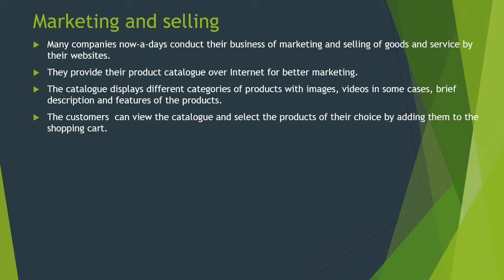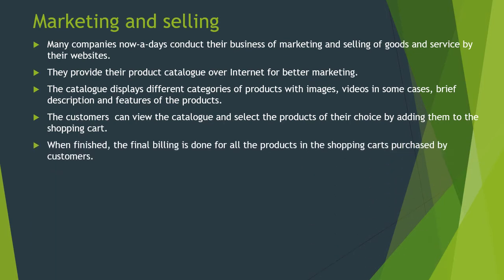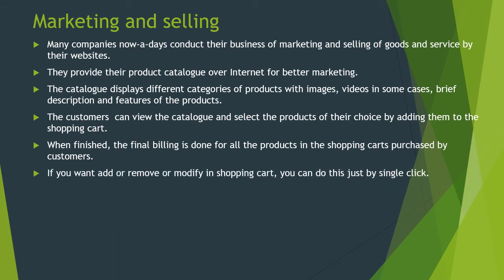Just like when you go to an offline store and put various items into a trolley — that is called a cart — and then go to the billing counter at the end, similarly there is a digital shopping cart where you can add products and finalize your purchase. When you have decided what you want, the final billing is done for all the products in the shopping cart. If you want to add, remove, or modify items in the shopping cart, you can do so with a single click.